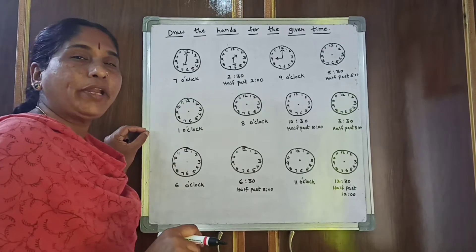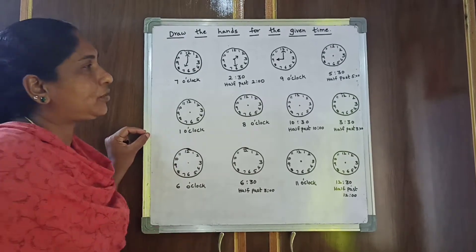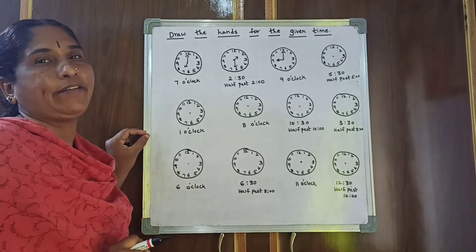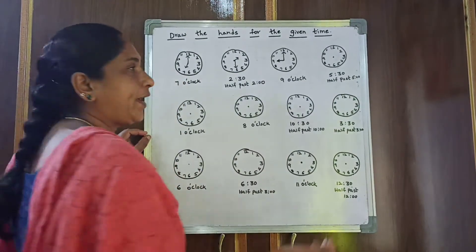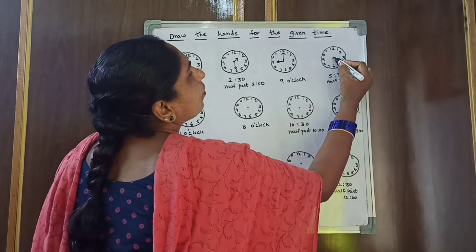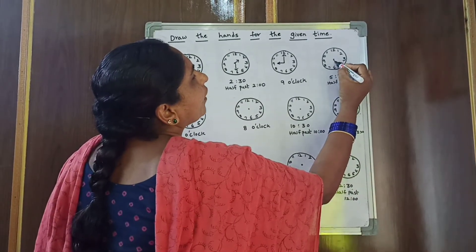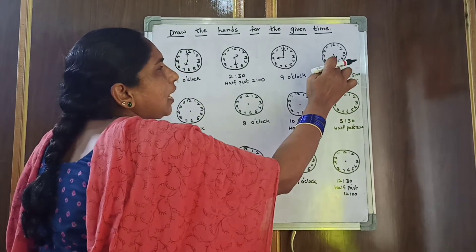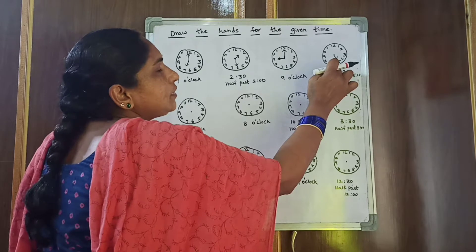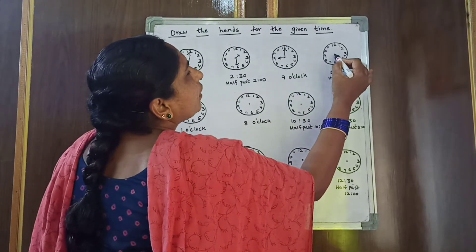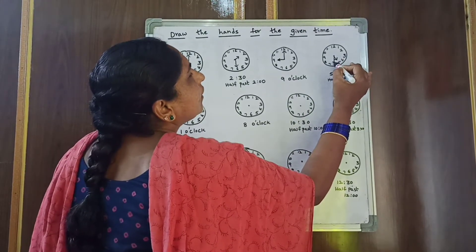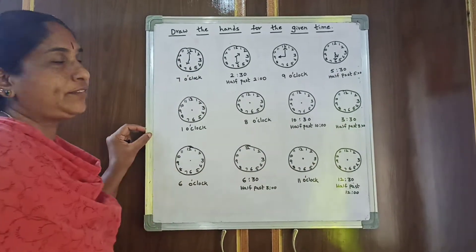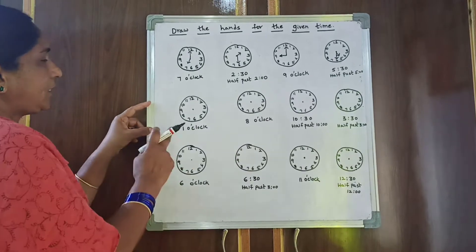Now 5:30, or half past 5. So 5 is the hour hand — from the middle point, draw the short hand to 5. And 30 means half past, so draw the long hand to 6. Then it becomes 5:30 or half past 5.